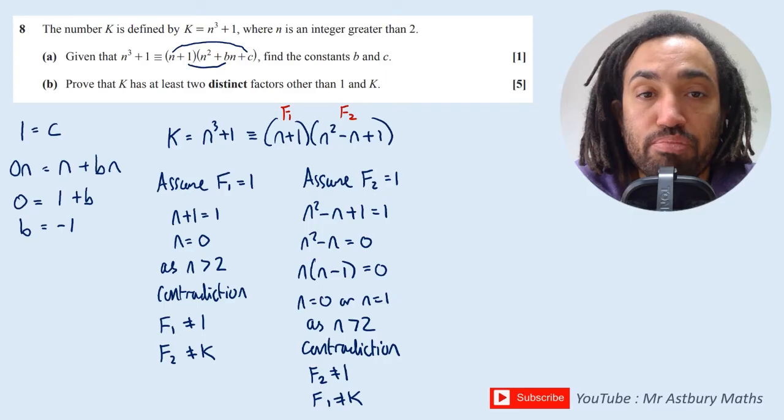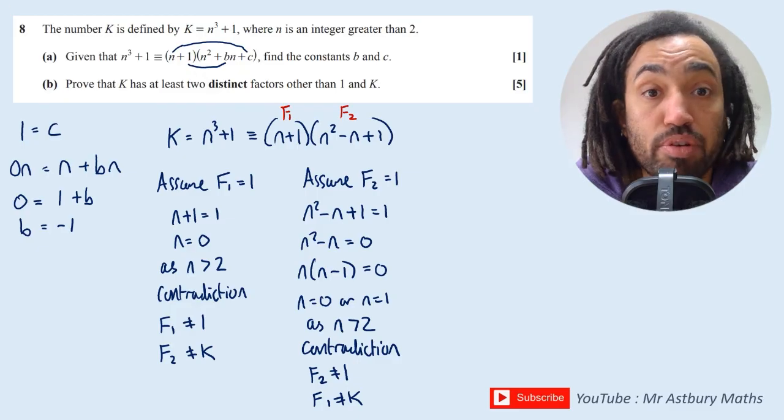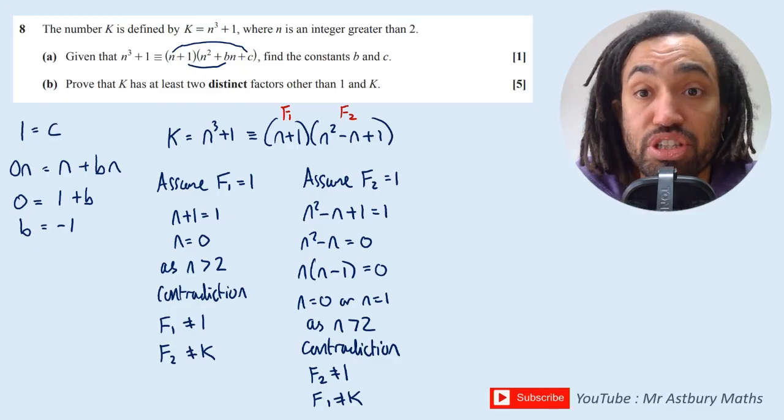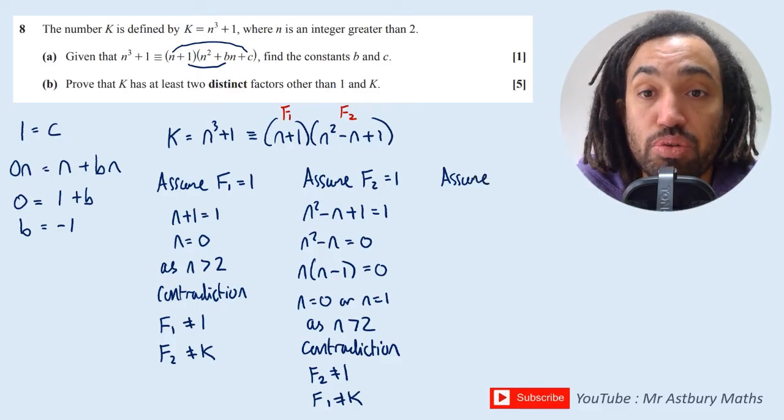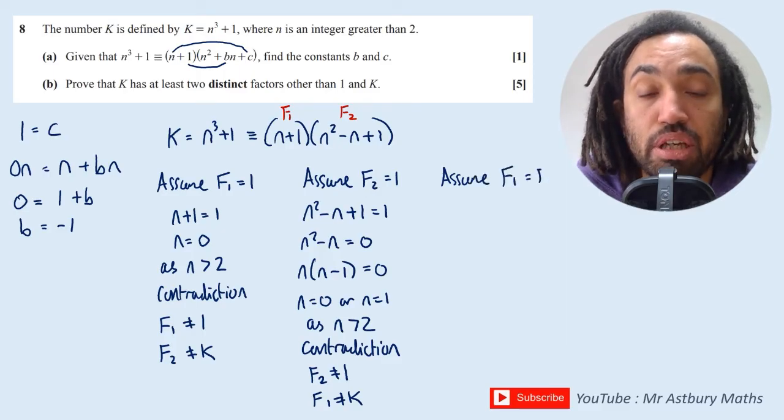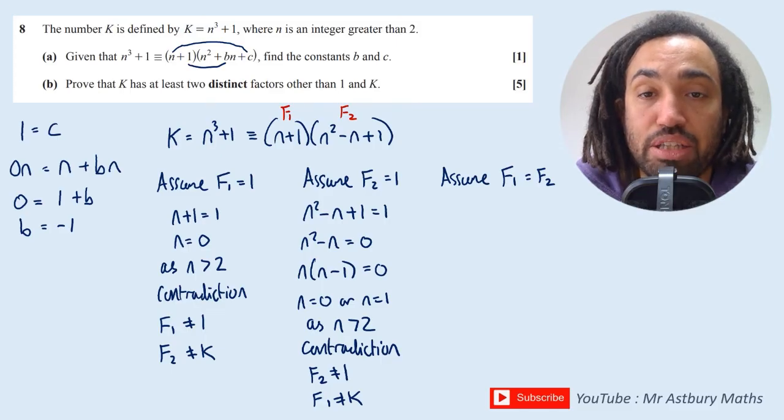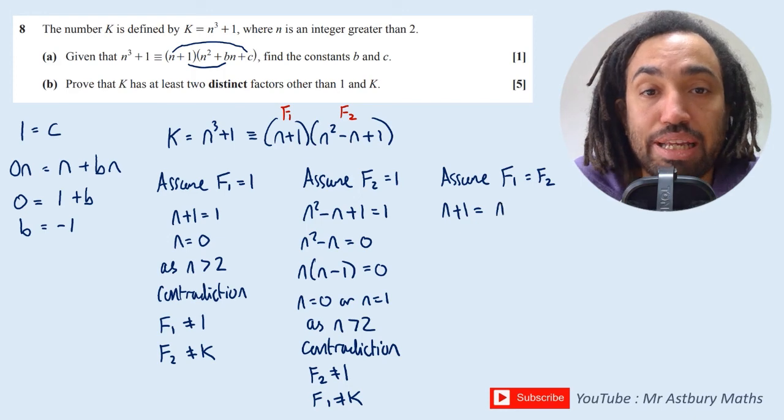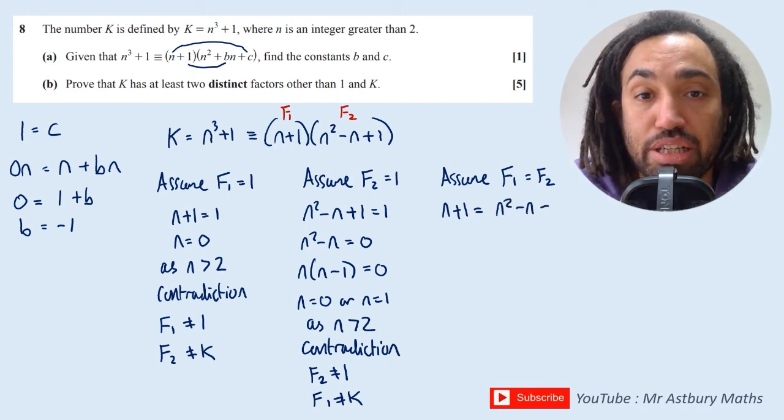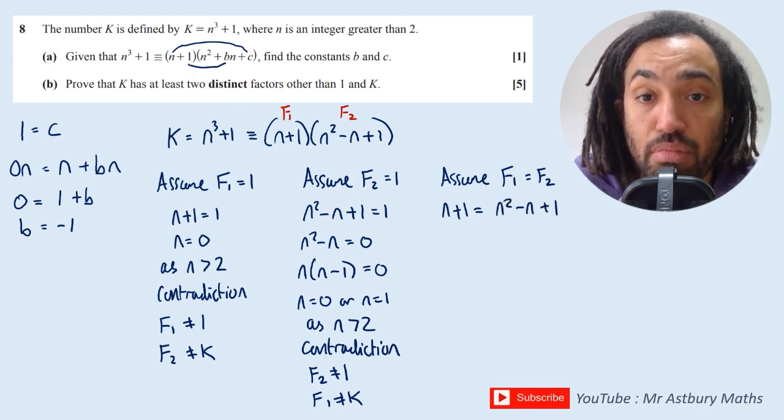Okay great, so we've proven that neither of these factors F₁ and F₂ are 1 or k, but we also have to prove that they are not the same, because remember we are proving that these are two distinct factors, which means different. So let's assume what happens when F₁ = F₂. Let's see what happens.